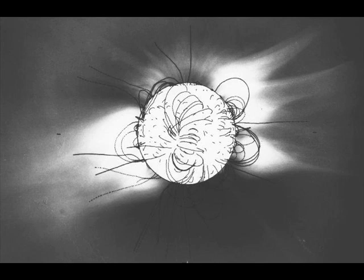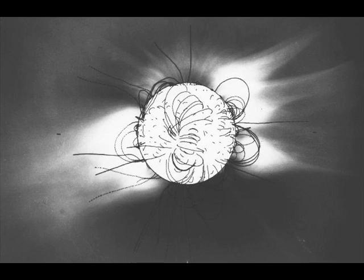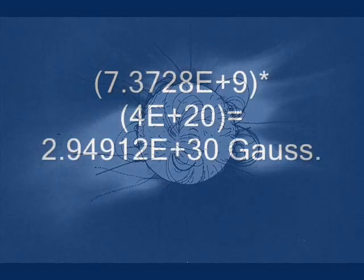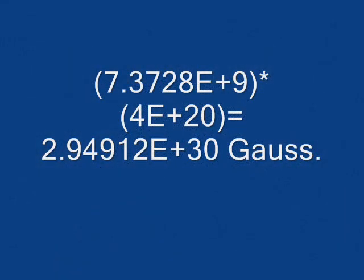So 10 times Earth's field of 0.5 gauss is 1.47456e+10, I apologize, 10 times stronger than the Earth's field to suspend one gallon of water. That's 14,745,600,000 times stronger than the Earth's field to suspend one gallon of water.